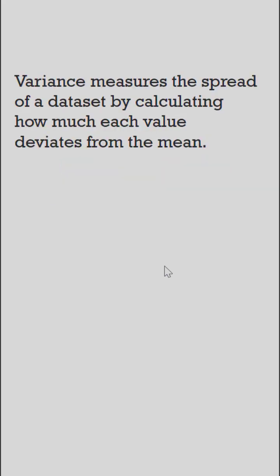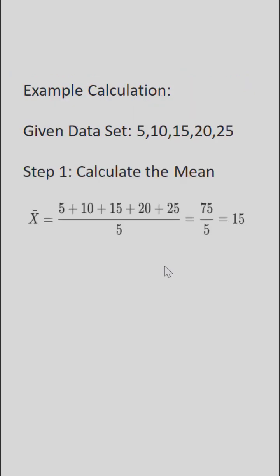How to calculate variance. Variance measures the spread of a data set by calculating how much each value deviates from the mean. For example, we have a data set of five samples: 5, 10, 15, 20, 25.